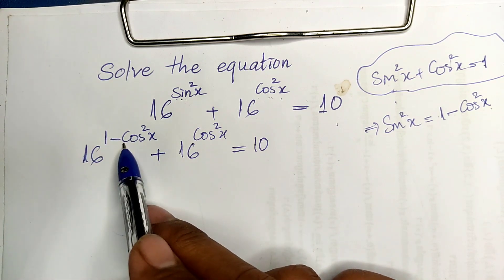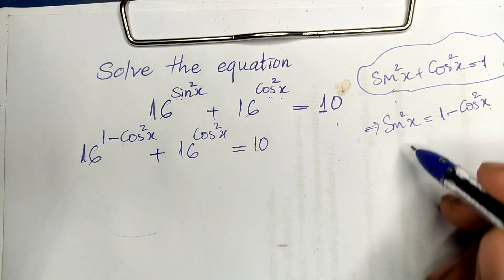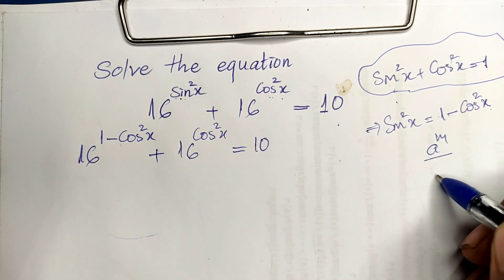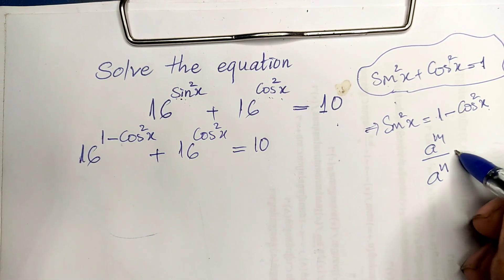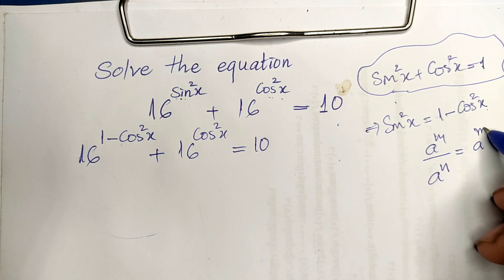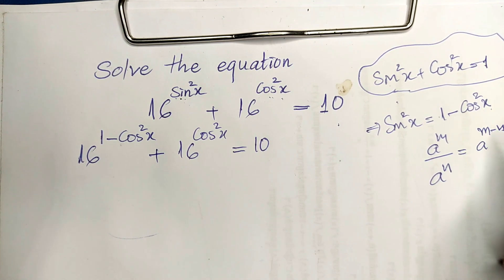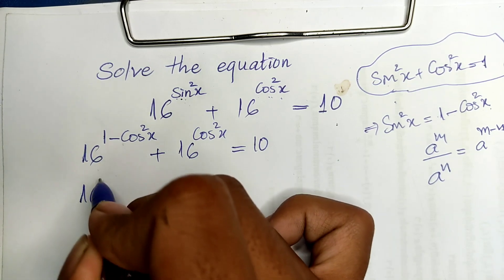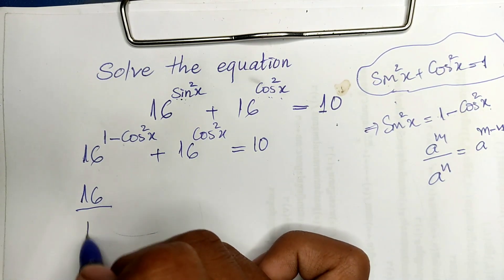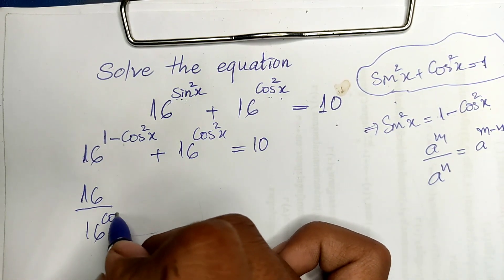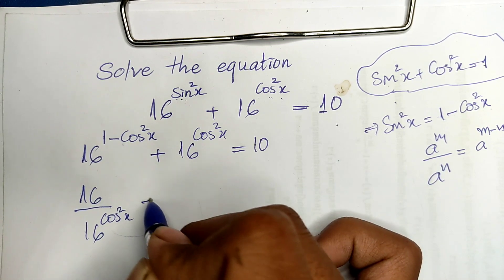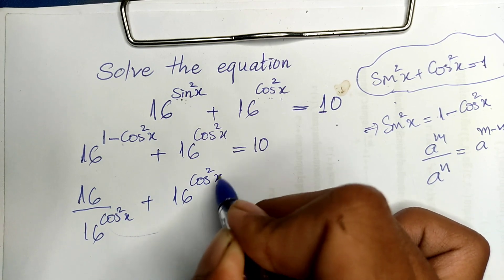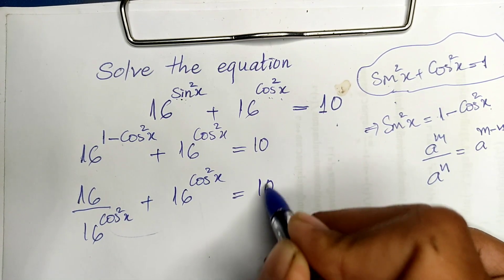Now we use the exponent rule: a to the power m divided by a to the power n equals a to the power (m minus n). So we can write this as 16 divided by 16 to the power cosine squared of h, plus 16 to the power cosine squared of h, equals 10.